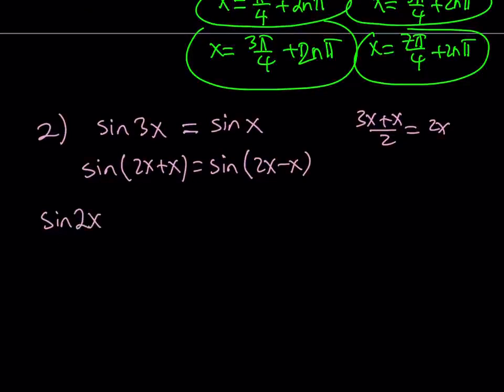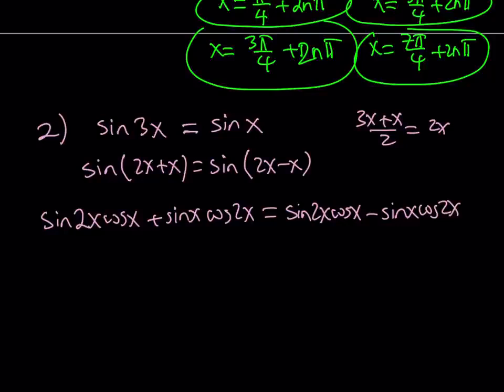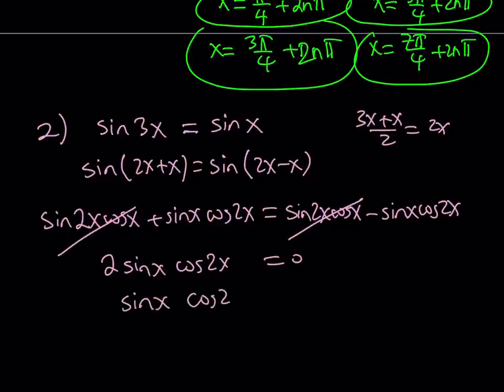Sine 2x, cosine x, plus sine x, cosine of 2x. And then on the right-hand side, same thing with the minus sine. Sine 2x, cosine x minus sine x, cosine 2x. The pattern is sine, cosine, sine, cosine. Then these two terms are going to cancel out. Let's put everything on the same side. 2 sine x, cosine of 2x equals 0. Divide both sides by 2, and you get sine x, cosine 2x as a product equals 0.